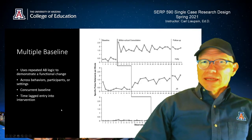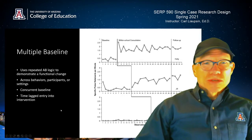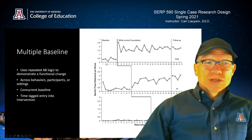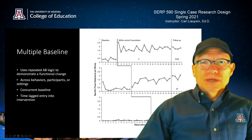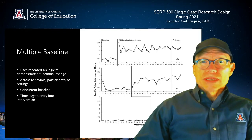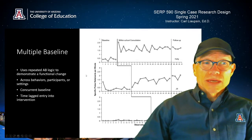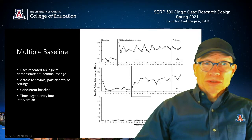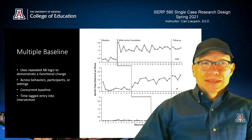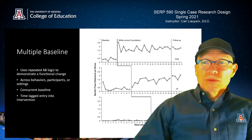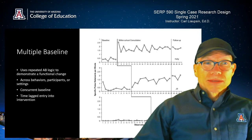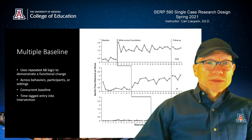In a multiple baseline design, it uses a repeated A-B logic to demonstrate functional change. You've got an A-B design, and you couldn't withdraw this — within school consultation with a teacher to help them learn to make more specific praise statements to their students. Once you taught it, they're going to do it — you can't take it away. So how do you demonstrate multiple examples of experimental control? In this case, they piled up A-B designs for participants.